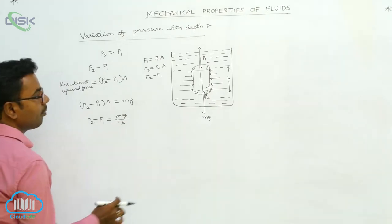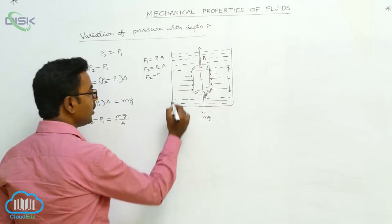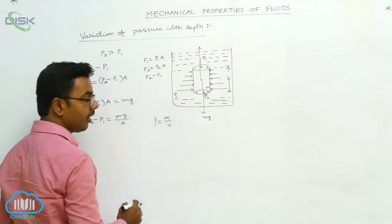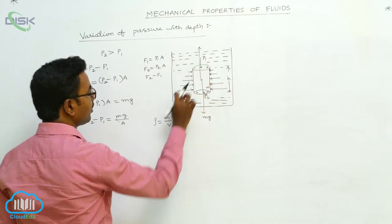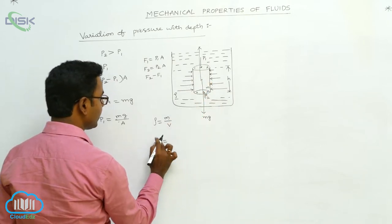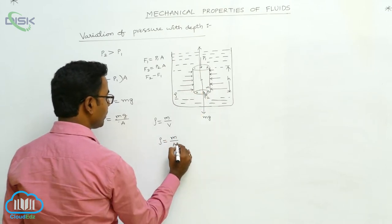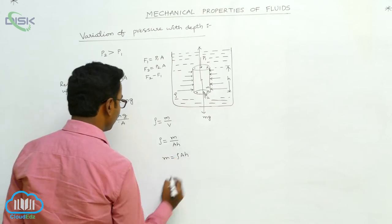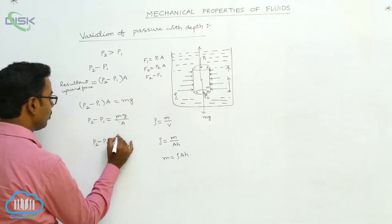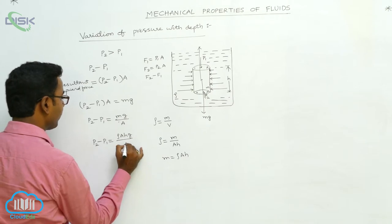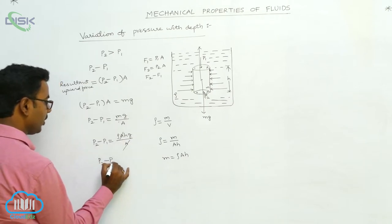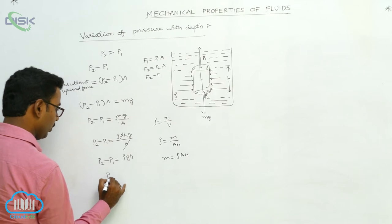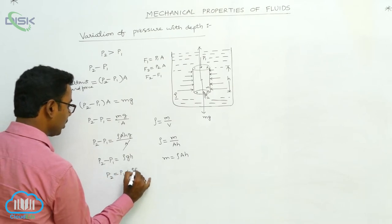Here M is the mass of the cylindrical part. If ρ is the density of the fluid, density is given by mass divided by volume. For this cylinder, the volume is the cross-sectional area A multiplied by height H. So ρ = M/(A×H), which gives M = ρAH. Substituting: P2 − P1 = ρAHg/A. The A cancels, so P2 − P1 = ρHg, also written as ρgH. Therefore P2 = P1 + ρgH.